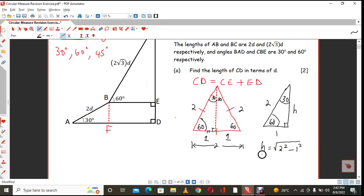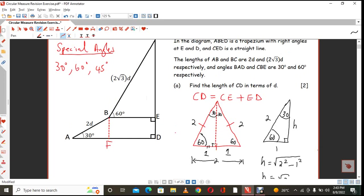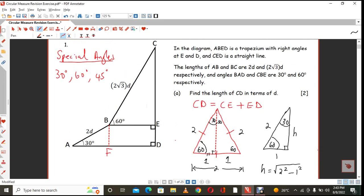So it means that the height will be 4 minus 1, which is root 3. So we are now dealing with such a scenario here. We have got a right angle triangle CBE. And this distance here, obviously, is going to be root 3.